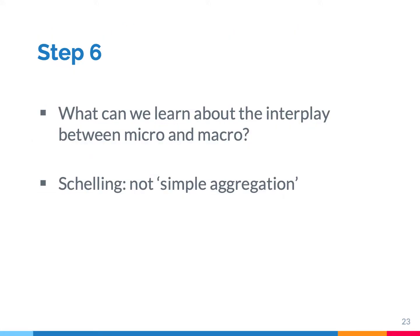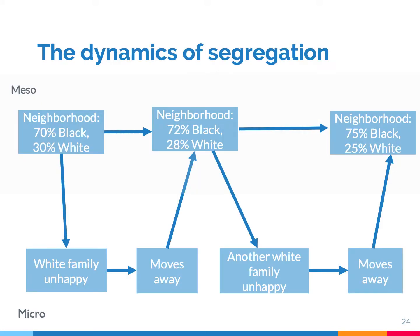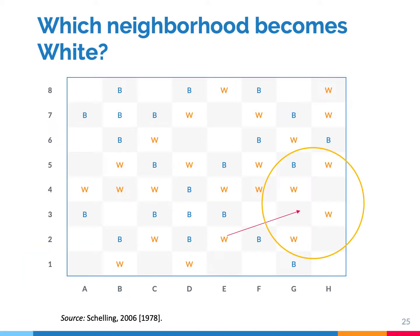What can we learn from this famous agent-based model? One insight is that simple aggregation does not work. That is because if, for example, a white family moves to another neighborhood, the racial composition of neighborhoods changes. And because of that change, it may well be the case that another white family decides to resettle. So the Schelling model is a very nice example of self-reinforcing processes. Once a white family decides to move away, more and more white families will follow.